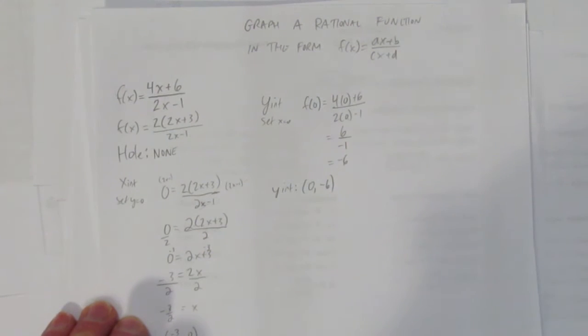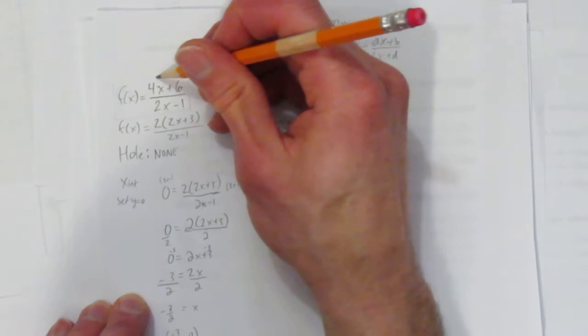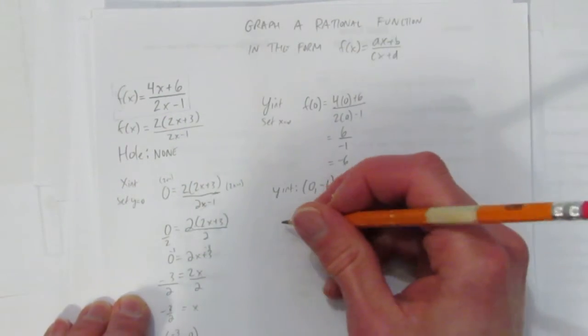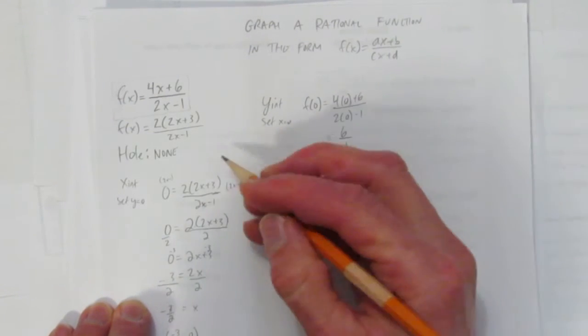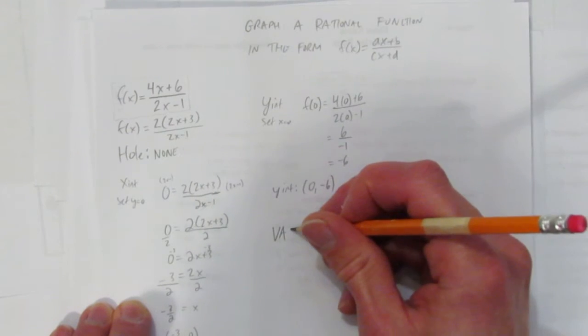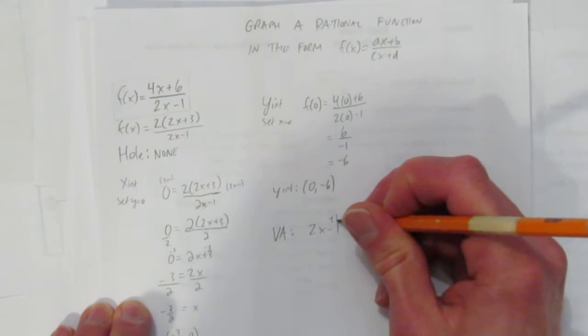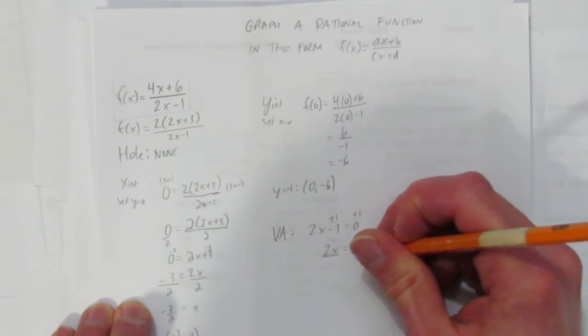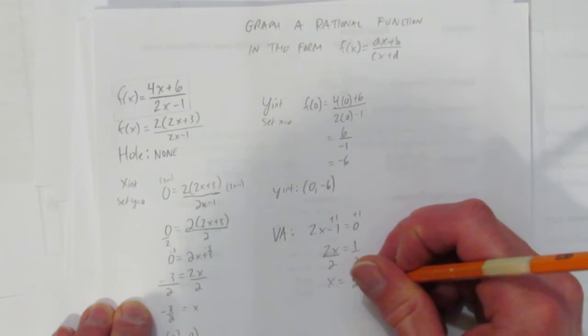We've got our x-intercept, y-intercept. We have no holes. The last two things you want to look for are the asymptotes, particularly the vertical asymptote and the horizontal asymptote. For the vertical asymptote, I want to find out what would make this denominator 0. So the vertical asymptote will be what makes 2x-1=0. Add 1 to both sides, you get 2x=1, divide by 2. This tells me there's a vertical asymptote at 0.5 or one half.